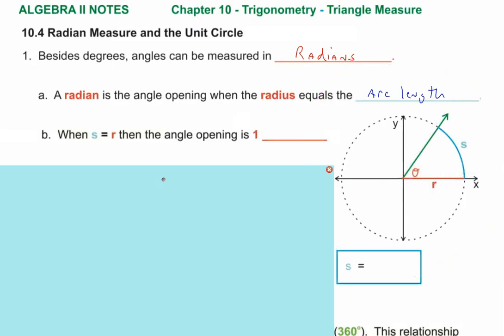That's the concept and the idea. When S equals R, the angle opening is one radian. It's always about just the way it looks — that's the amount of opening of one radian. We'll get into how many degrees and all that in a bit.